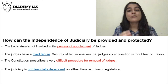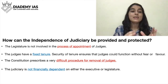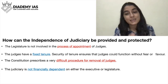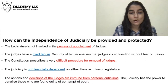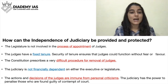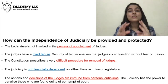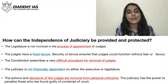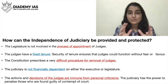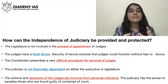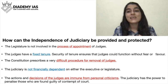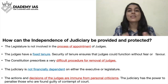The judiciary is also not financially dependent on either the executive or the legislature — their salaries and allowances have no connection with other organs. This also enhances the independence of judiciary. Furthermore, the actions and decisions of judges are immune from personal criticism. The judiciary has the power to penalize those found guilty of contempt of court. Judges' decisions cannot be personally criticized; if someone does so, that amounts to contempt of court.